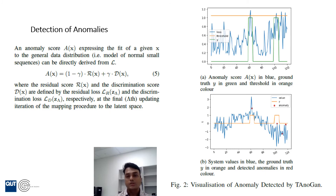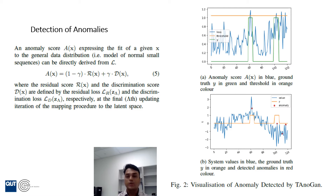This figure shows how anomalies are detected by our proposed TANUGAN model. The blue line in the first figure shows the anomaly scores. The green line shows the ground truth anomaly values, and the orange line shows the threshold level. When comparing the anomaly scores, we can see that there are four peaks that go beyond the threshold level. When comparing these four peaks with the ground truth, we can see that there are two true positives and two false positives.